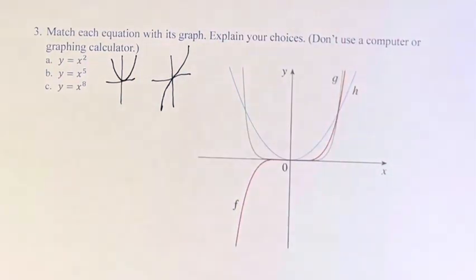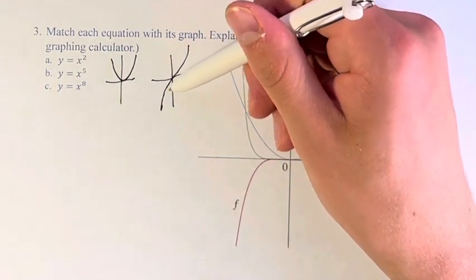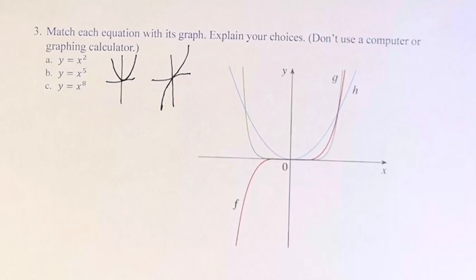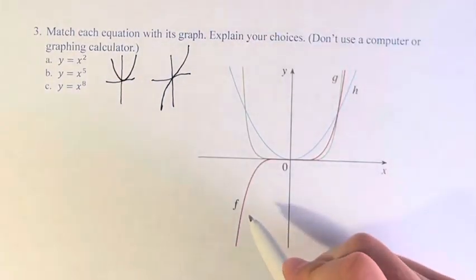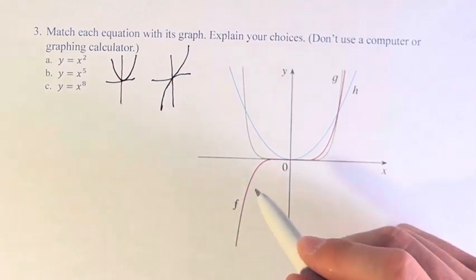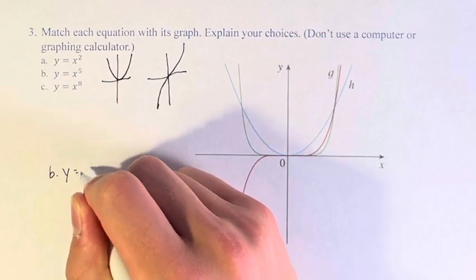So if we look at our graph, we have f, g, and h. The only graph that looks something like this, where as you go to the negative x values, your value goes to negative infinity, the only one that does that is f. So therefore, b, y equals x to the fifth, is represented by f.